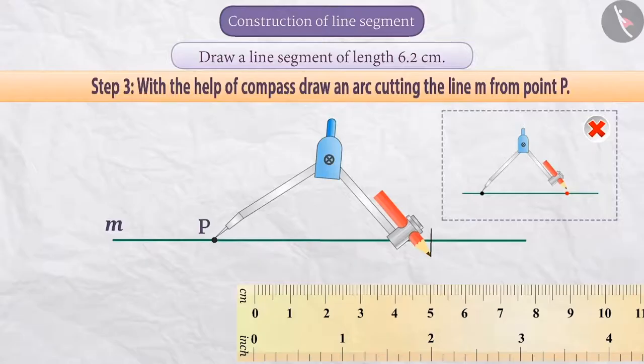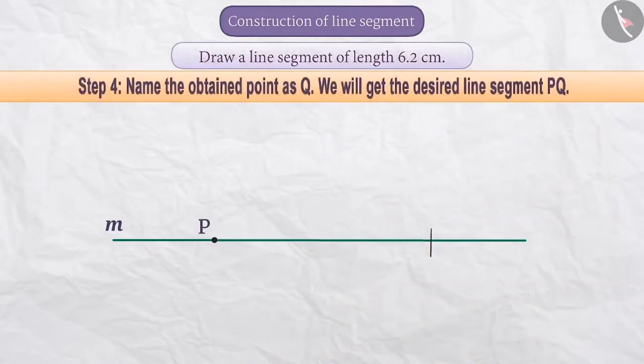Step 4: We will name the point where the arc intersects the line M as Q. Here we have obtained a line segment PQ of length 6.2 cm.